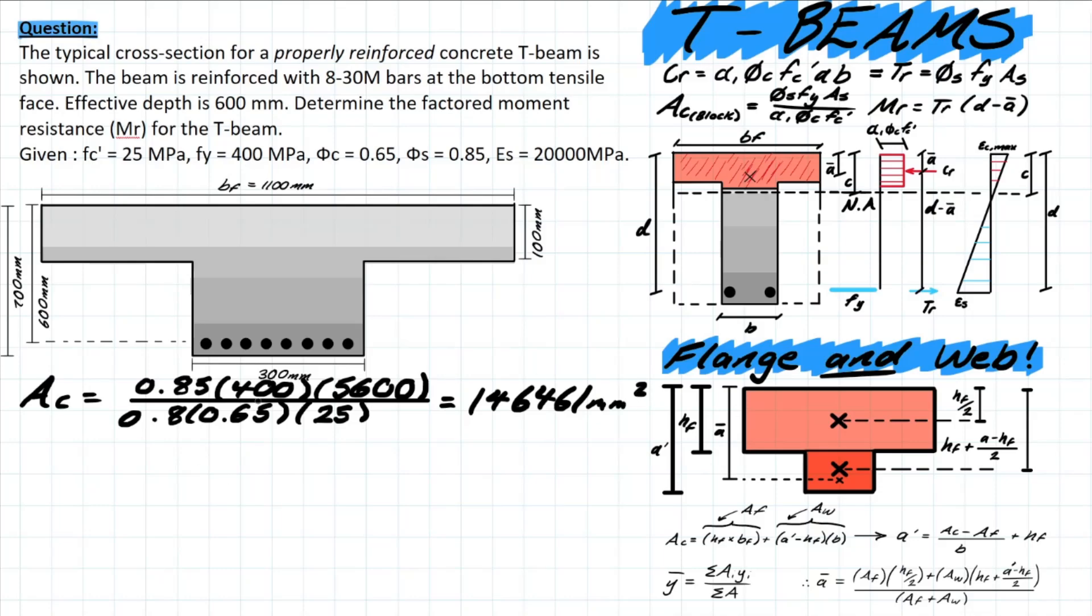The next thing we should do is start thinking about what this area of concrete actually represents. Area of concrete for our compressive block will be a combination of the area of the flange plus the area of the web. So the area of the flange is very easy, that's just going to be the height of the flange times the length of that tributary area of that flange which is 1100 for our case, and then that thickness is 100.